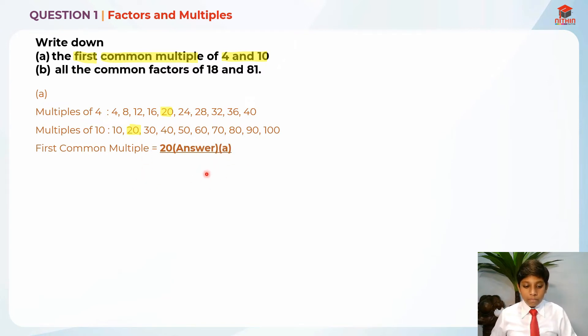So 20 is the answer for part A. Now let's move on to part B. Write down all the common factors of 18 and 81. So they're telling us to write down all the common factors between 18 and 81.